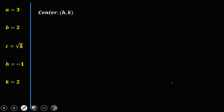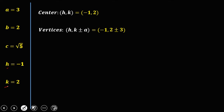The center is at (h, k) = (-1, 2). For the vertices, use (h, k ± a): h is -1, k is 2, and a is 3. So we compute 2 + 3 = 5 and 2 - 3 = -1. The vertices are (-1, 5) and (-1, -1).